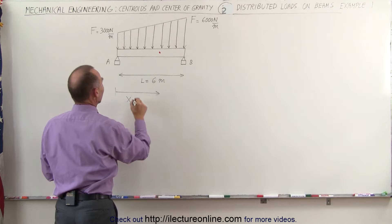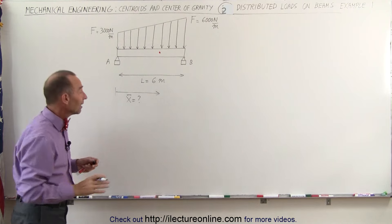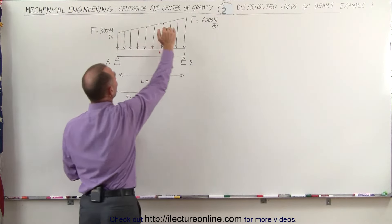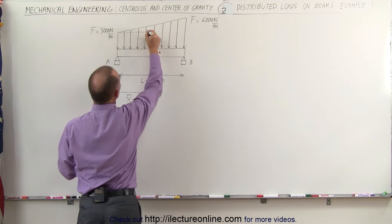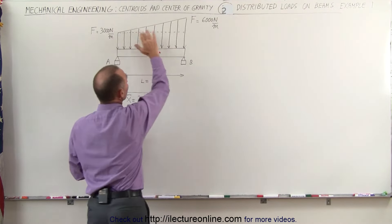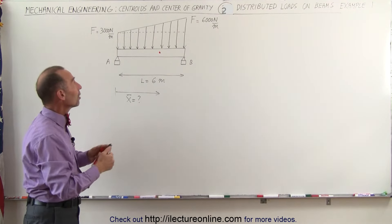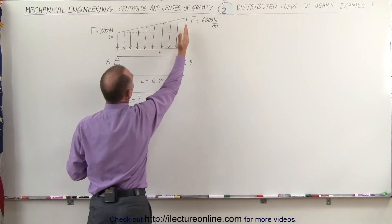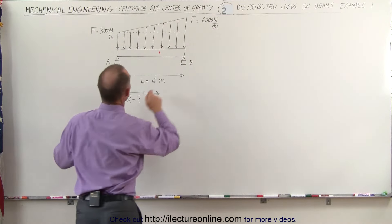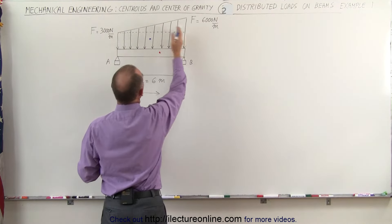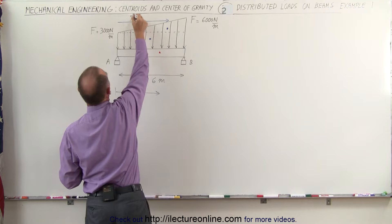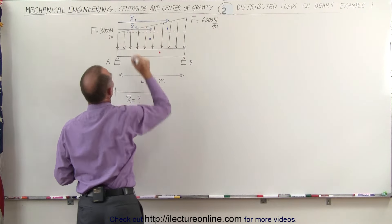Let's call it x-bar, the x-coordinate of the centroid of that distributed load. Since the load is slanted, we divide it into two regions: one rectangular in shape — easy to find the centroid of — and one triangular in shape. The centroid of the triangle is one-third of the distance from the base. The centroid of the rectangle is right in the middle, and we'll call these x sub 1 and x sub 2.